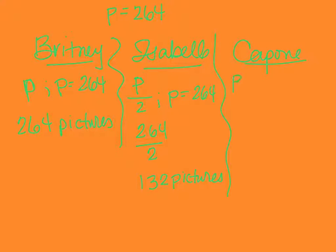And then the expression for Capone was P divided by 2 plus 51. P still equals 264. Substitute in 264 divided by 2 plus 51. Half of 264 is 132. I add 51 to that. 132 plus 50 is 182. Plus one more is 183 pictures.